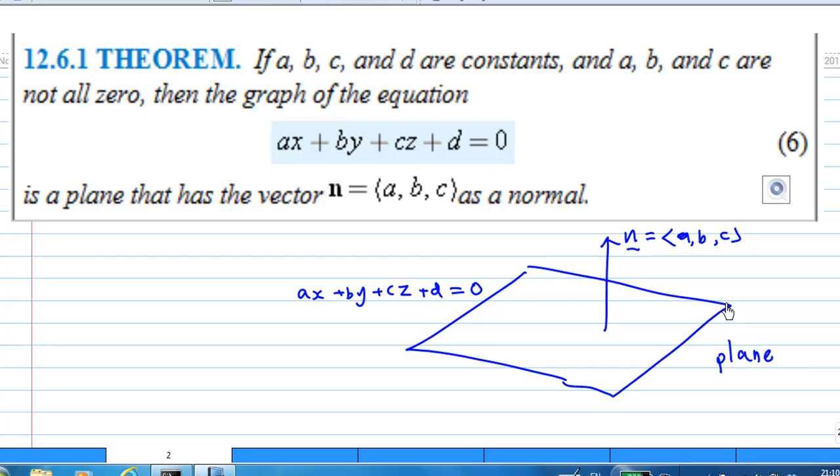In terms of a diagram, you can see that I have a plane. The equation of the plane is ax plus by plus cz plus d equals 0, and then the normal to the plane, which is perpendicular to the plane, is vector abc.